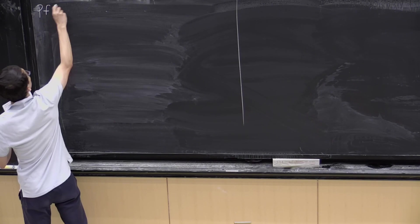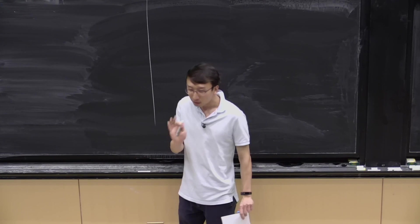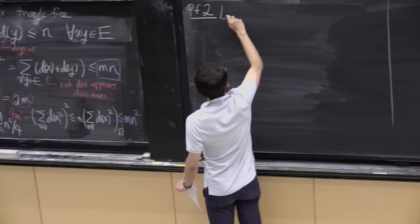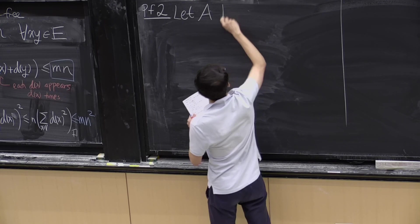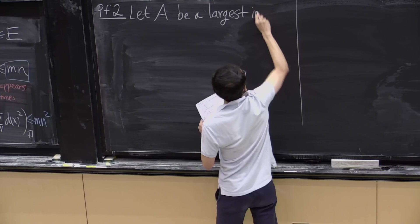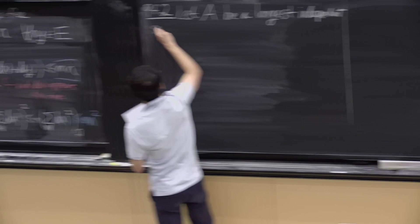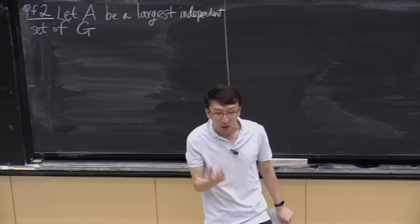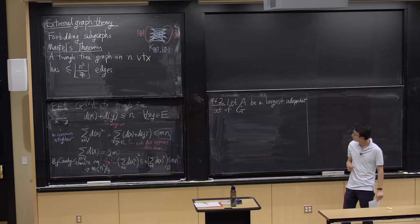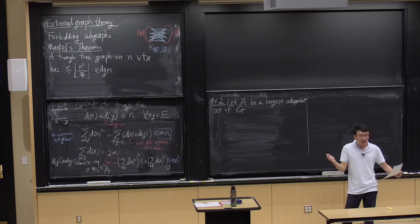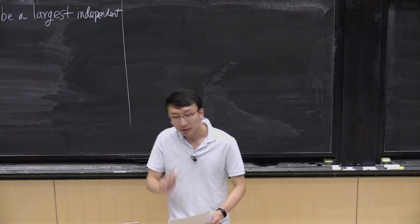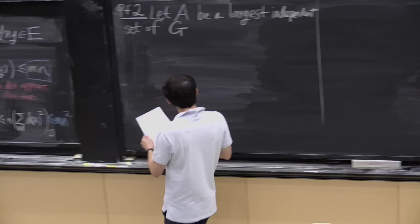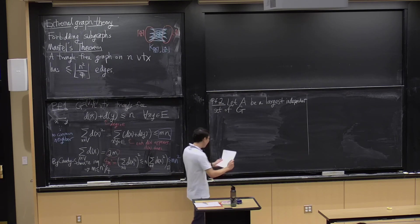Let me show you a different proof of Mantel's theorem. In this proof, we begin with a step that seems a little tricky. Let A be a subset of vertices such that A is a largest independent set of G. Remember, an independent set is a subset of vertices with no edges inside. You may have many independent sets all having the same maximum size — take one of them. Sometimes magic happens.